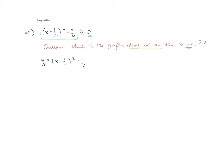the parent function there would be your y equals x squared, and it looks like it has a horizontal shift. We're going to go 1 half units to the right, and we're also going to go 9 fourths units down.